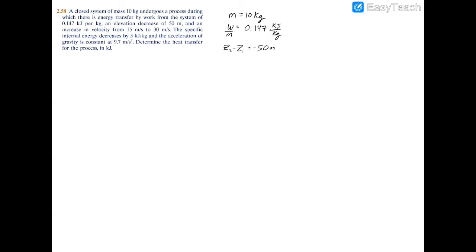The velocity increases from 15 meters per second to 30 meters per second, so V2 minus V1 equals 30 minus 15 meters per second. The specific internal energy decreases by 5 kilojoules per kilogram, so U2 minus U1 on a per unit mass basis equals negative 5 kilojoules per kilogram. Gravity g is 9.7 meters per second squared, and we're asked to find the heat transfer Q in bulk form in kilojoules.